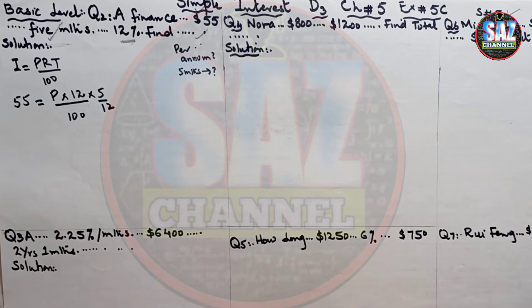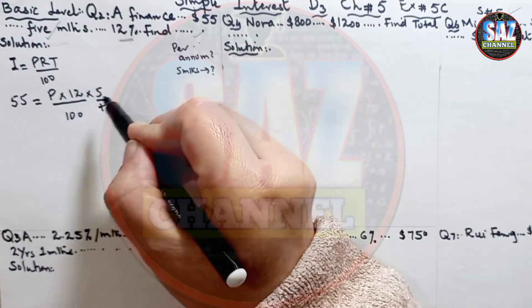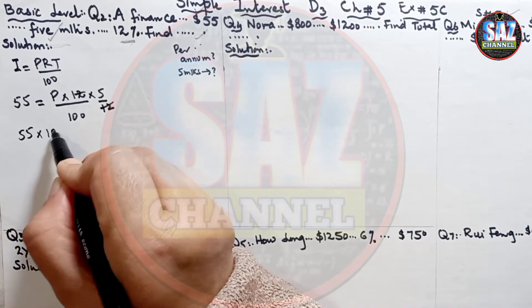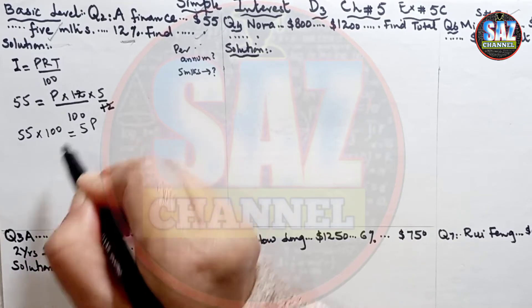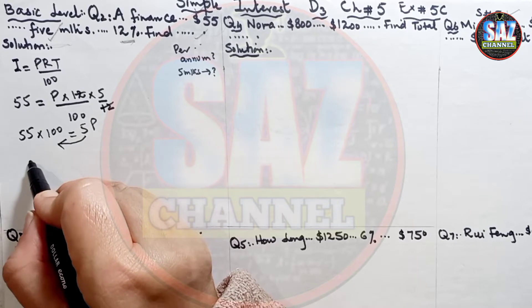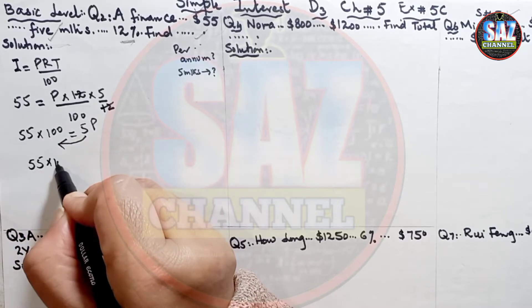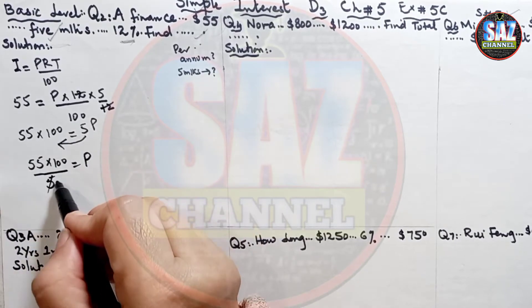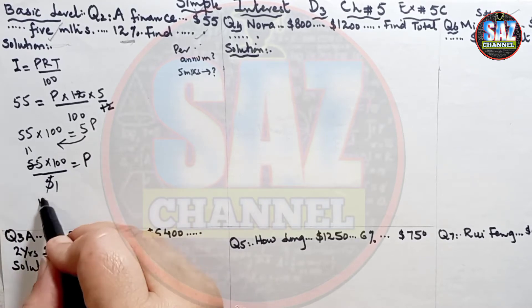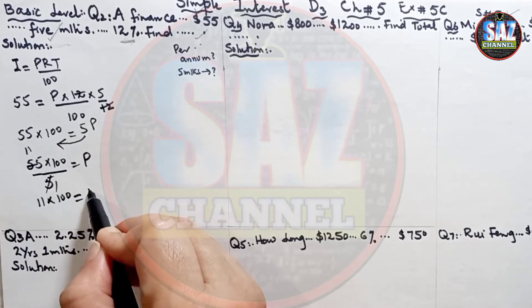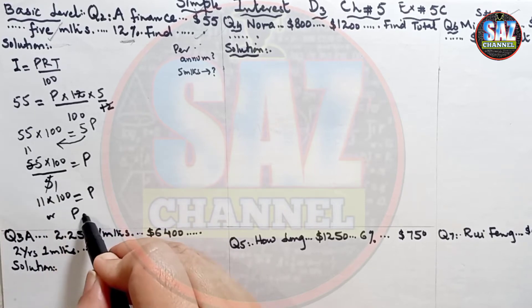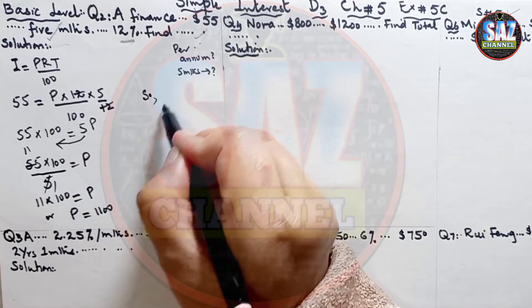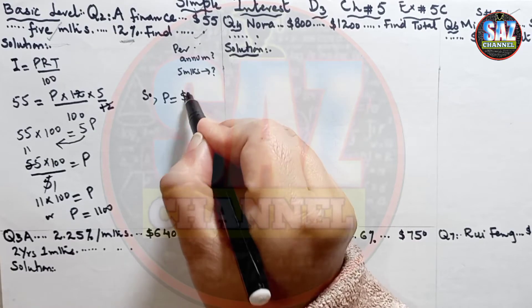To simplify the equation, 12 cancels with 12. Shift 100 to the other side: 55 × 100 = 5P. To get the value of P, shift 5 to the other side, so the equation becomes P = (55 × 100)/5. So, 11 × 100 = P, giving a principal amount of $1,100.